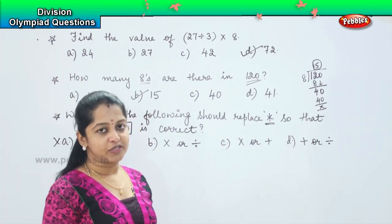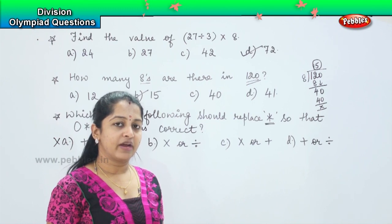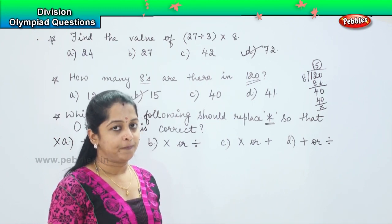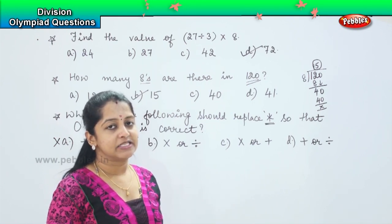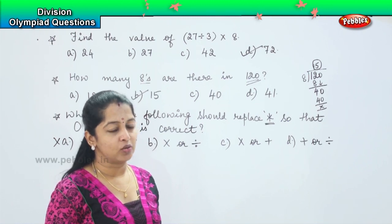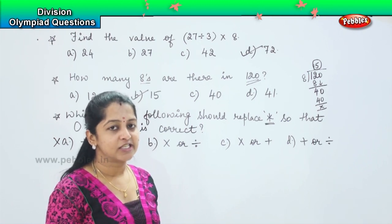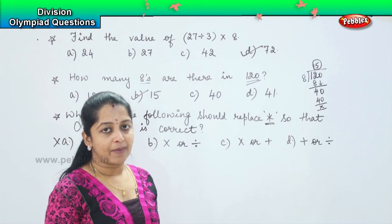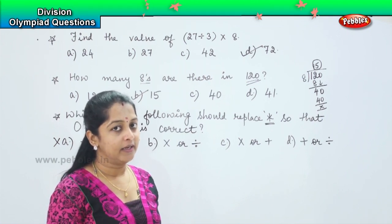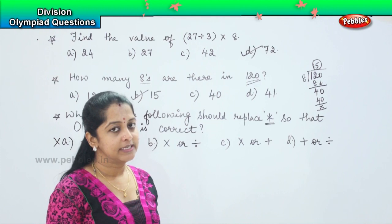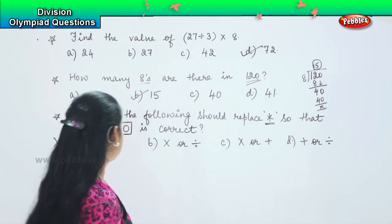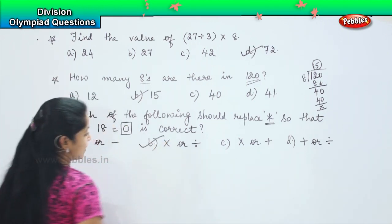Next, coming to option B, we will try to revive the property of multiplication. Anything multiplied by 0 will be 0. So which means multiplication will stand correct. Coming to the division, anything divided by 0 will be 0. So which means option B is the right one.